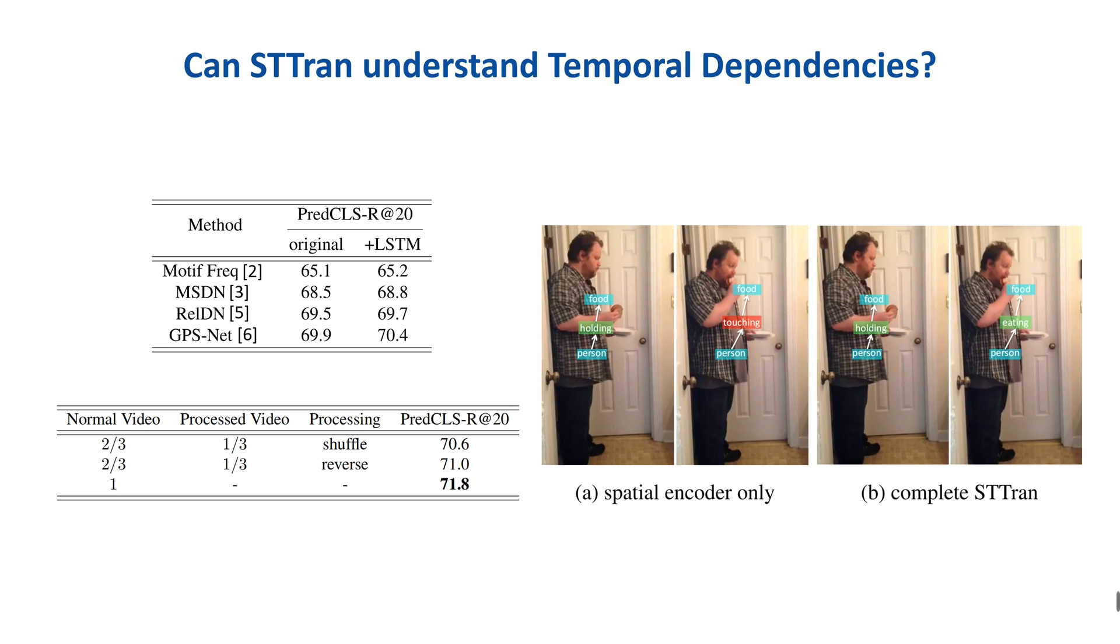In order to verify that the STTran really improves performance through temporal dependencies, we randomly sample one-third of training videos and shuffle or reverse them. After adding noise in the temporal information, the performance of STTran drops. The figure shows that the complete STTran can infer relationships better with temporal dependencies.